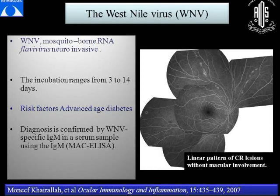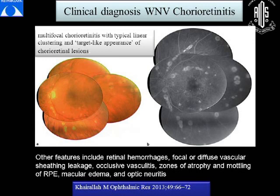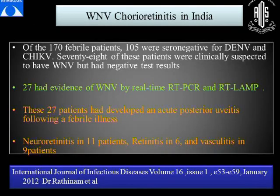West Nile virus is a mosquito-borne RNA flavivirus; it is neuroinvasive with an incubation period of 3 to 14 days. Risk factors are advanced age and diabetes, and the diagnosis is confirmed by MAC-ELISA. It was first described by Monsef Kerala et al. with a linear pattern of chorioretinal lesions without macular involvement in 38 patients; all had febrile illness with neurological symptoms, and 32 of 38 had chorioretinal lesions associated with background diabetic retinopathy. In India, Dr. Ratnam et al. studied 170 febrile patients; 78 were clinically suspected to have West Nile virus and 21 had evidence on real-time PCR and RT-LAMP PCR, presenting with posterior uveitis, febrile illness, neuroretinitis, retinitis, and vasculitis.